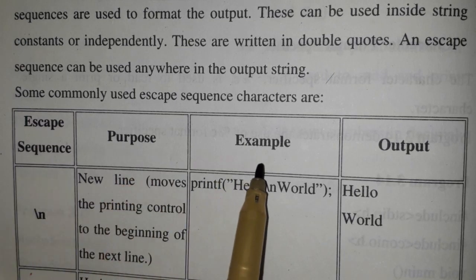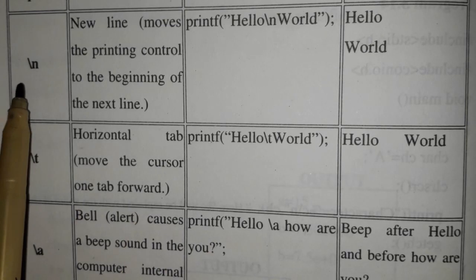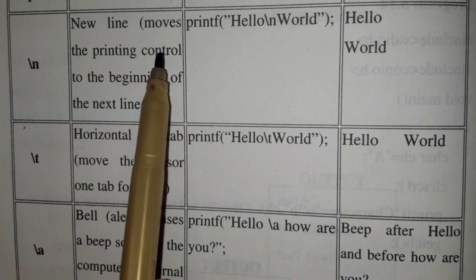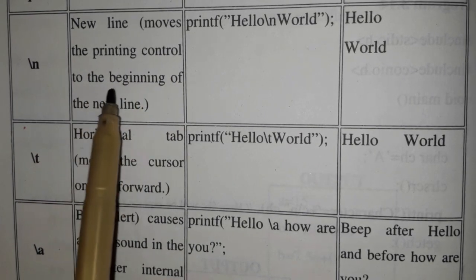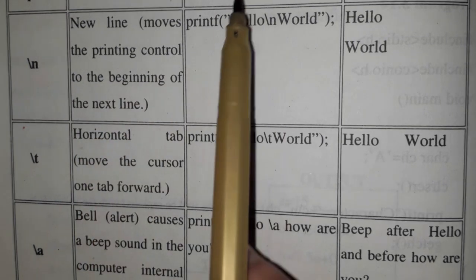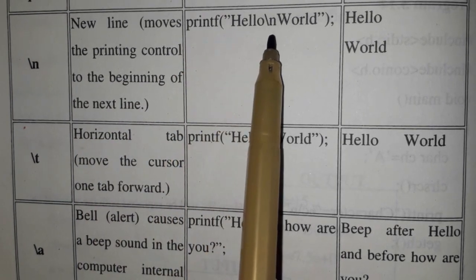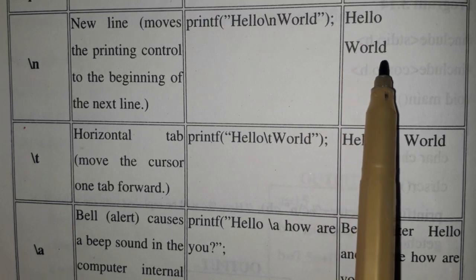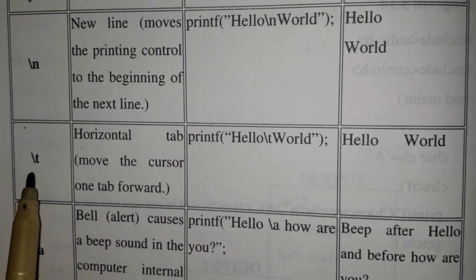Name of escape sequence, purpose, example, and output. Backslash n is the most widely used escape sequence. It prints a single line like hello backslash n world. Hello is printed, then a new line is inserted after hello.